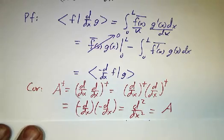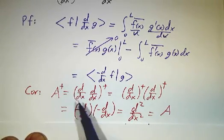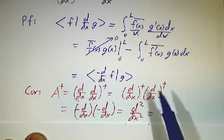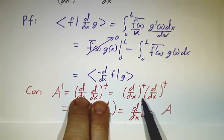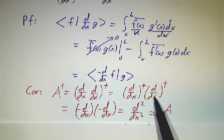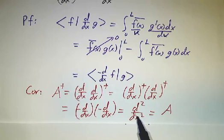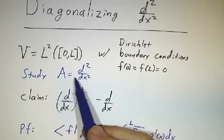That tells us the adjoint of our operator a, the second derivative. Since a is the derivative of the derivative, and the adjoint of a product of two operators is the product of the adjoints in the opposite order, we get minus d/dx times minus d/dx, which is d squared by dx squared — which is a again. So the second derivative operator is Hermitian.